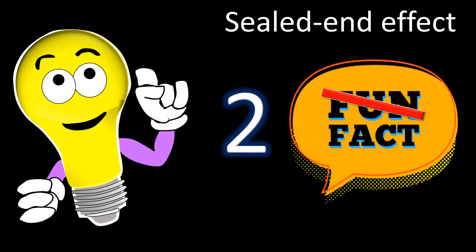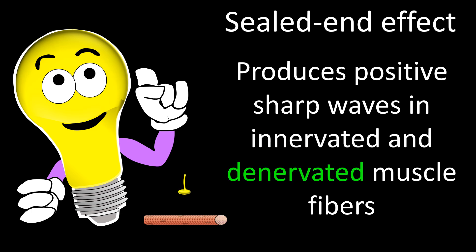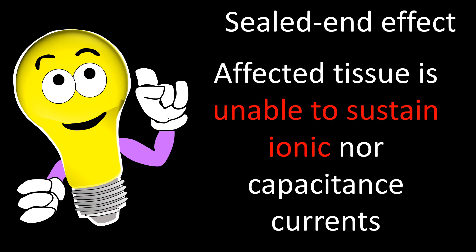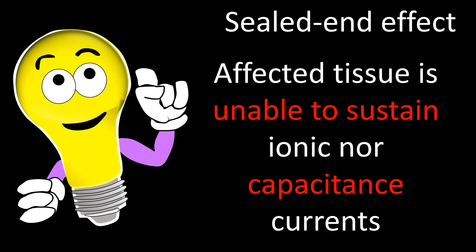First, about sealed-N effect — two sealed-N effect facts. The first is that sealed-N effect produces positive sharp waves in innervated and denervated muscle fibers. The second is that the tissue affected by the sealed-N effect is unable to sustain ionic current — that is, current requiring functional voltage-gated channels including sodium, potassium, or calcium-activated potassium channels — nor to sustain capacitance current, which relies on repulsion of similar charges across intact cell membrane and does not require gated channels.